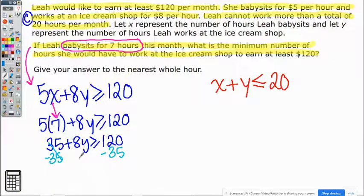8y comes down as a positive one, and then from here, if you were to subtract these two numbers, you would get 85.